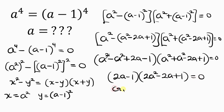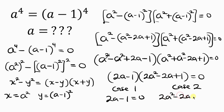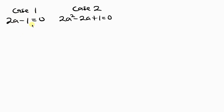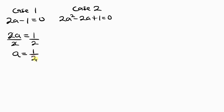We have two cases. Case 1: 2A minus 1 equals 0. Case 2: 2A squared minus 2A plus 1 equals 0. For case 1, moving negative 1 to the right gives 2A equals 1. Dividing both sides by 2, A equals 1 over 2. So that is one solution for A.